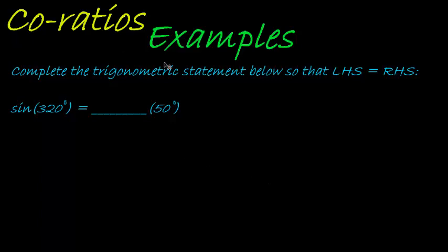Here's another example on co-ratios. Complete the trigonometric statement below so that the left hand side is equal to the right hand side. We can see here that sine of 320 degrees is equal to something 50 degrees.